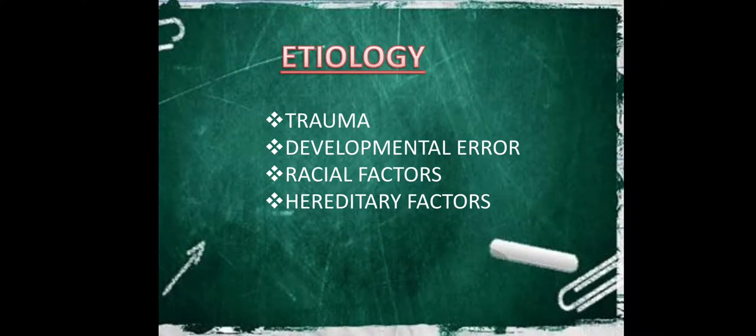Next, let's come into the etiology. There will be trauma, developmental errors, racial factors, and hereditary factors are the main causes or etiology of this deviated nasal septum. Trauma and errors of the developmental are the two important factors of causation of deviated nasal septum.